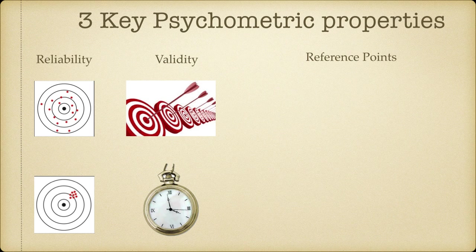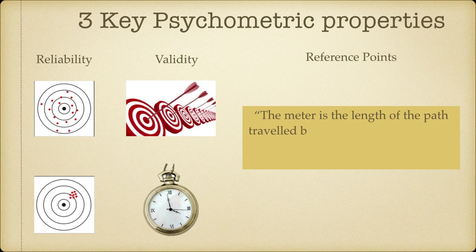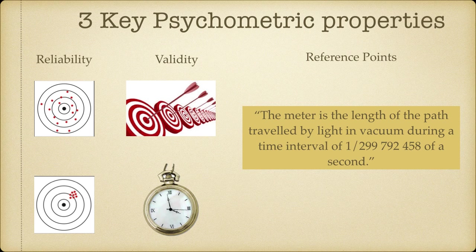All measurements have a reference against which they are compared. For example, a thermometer has a reference point at 0 degrees Celsius — the temperature when water freezes — and another at 100 degrees Celsius, when water starts boiling. The scale between 0 and 100 is divided into 100 equal parts, each representing 1 degree Celsius. Similarly, the measurement of length has a reference point for 1 meter, and there is an international organization which keeps a record of references for physical measurements.